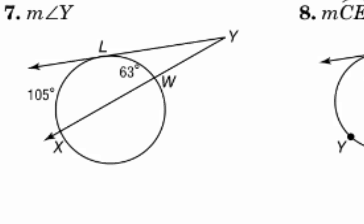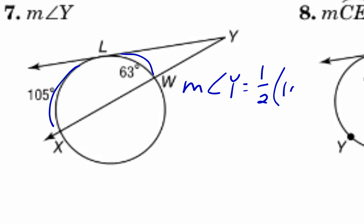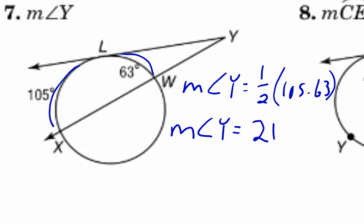On number seven, the intersection is outside, so the angle is half the difference of the arcs, and I know both arcs. The measure of angle Y is half of 105 minus 63. Half of 42 is 21 degrees. When the intersection is outside, the angle measure is half the difference of the arcs.